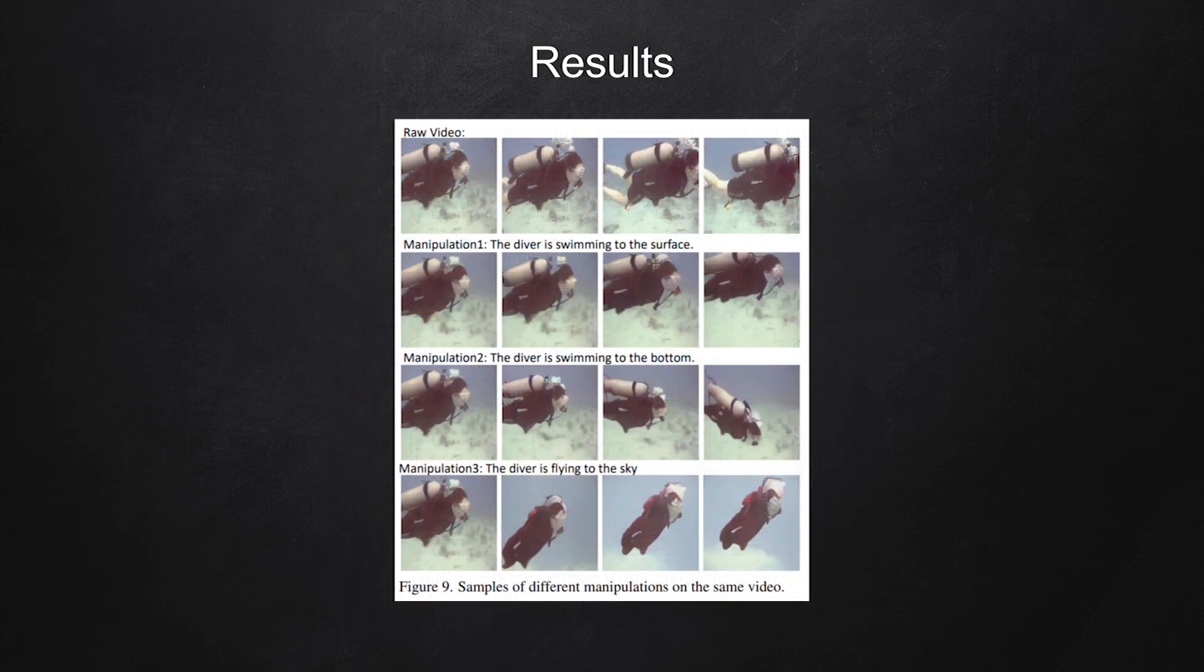This not only works in static images, but also in the video domain. In this result, the top row shows the sequence of raw videos, and each row shows different manipulation performed to the raw video. The first manipulation says 'the diver is swimming to the surface.' We can see the diver going upwards towards the surface. If the model takes text saying 'the diver is swimming to the bottom,' the diver swims downwards as video frames progress.